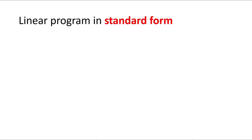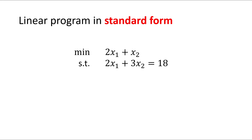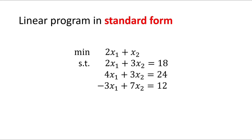A linear program in standard form is a more restrictive special form of linear programs. The objective must be to minimize some linear function — maximization is not allowed. Every constraint must be an equality constraint, so less-or-equal or greater-or-equal constraints are not allowed. And for every single variable we have a non-negativity constraint.